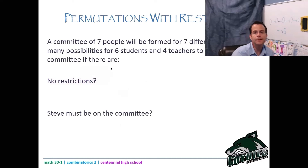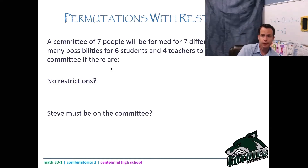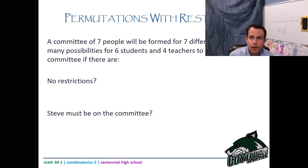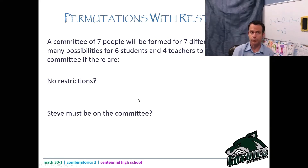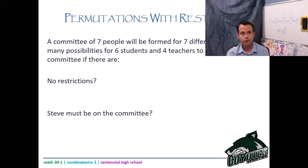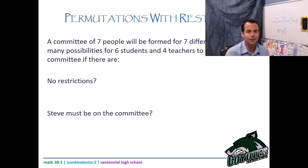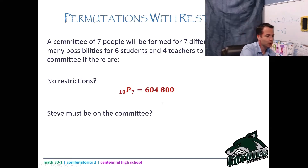A committee of seven people will be formed for seven different roles from six students and four teachers. If there are no restrictions, I don't care who's a student or teacher — I have 10 people and need 7 for distinct roles. That's 10P7, which equals 604,800.